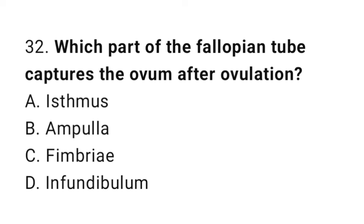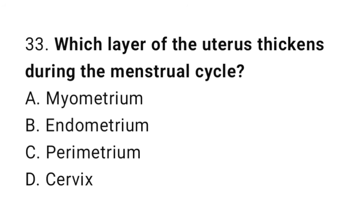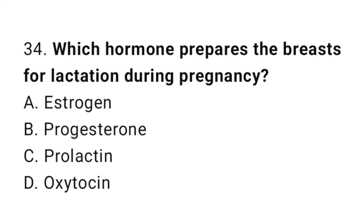Question number 32: Which part of the Fallopian tube captures the ovum after ovulation? The correct answer is C, fimbria. Question number 33: Which layer of the uterus thickens during the menstrual cycle? The correct answer is B, endometrium. Question number 34: Which hormone prepares the breasts for lactation during pregnancy? The correct answer is C, prolactin.